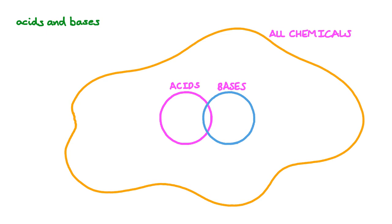The simplest description of an acid could be a substance that tastes sour, while the simplest description of a base could be a substance that reacts with an acid. Over time, descriptions of acids and bases have changed. Each description is named after a different scientist or group of scientists.